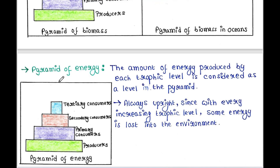Next is pyramid of energy. The amount of energy produced by each trophic level is considered as a level in the pyramid. Producers make maximum energy, then primary consumers, then secondary consumers, and then tertiary consumers. So tertiary consumers yield minimum energy.